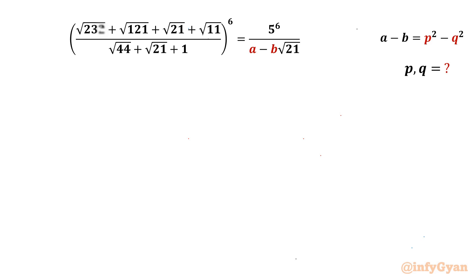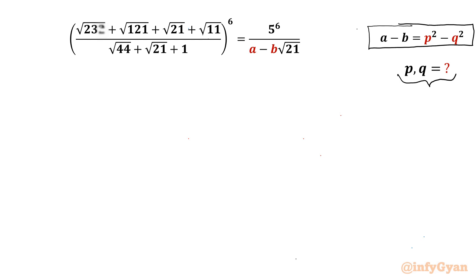Welcome back to Infigyan, my dear friends. In today's video we are having one very interesting question from Radical Algebra. We have to evaluate P and Q where A minus B equals P squared minus Q squared when this equation holds true.